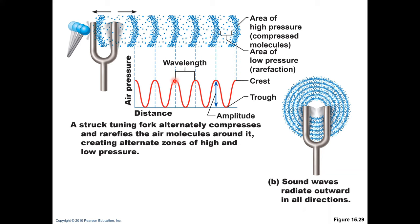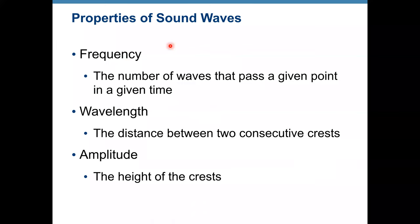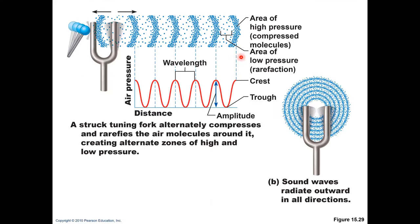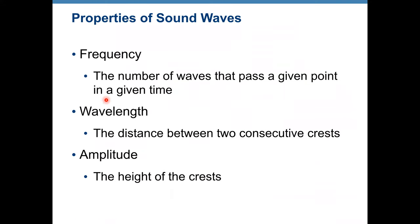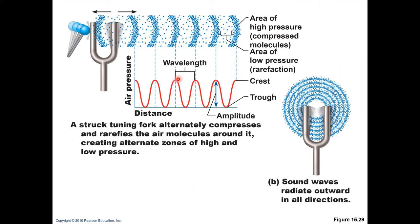This is the crest of the waves, and the distance between two crests is called wavelength. When talking about sound waves, we need to mention frequency. Frequency is the number of waves that pass a given point in a given time. If you count how many waves move through a point in one second, that is your frequency. The higher the number of waves in a given time, the higher the frequency. Wavelength is the distance between two consecutive crests.